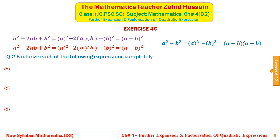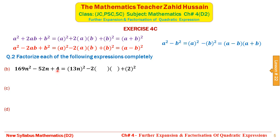Question 2 involves the same structure but with a negative sign — this uses the second identity. For 169n² − 52n + 4: we write 169n² as (13n)², then minus 2 with two empty brackets, then 4 as 2². In the first bracket we write 13n, in the second bracket we write 2, giving (13n − 2)² as the factors.